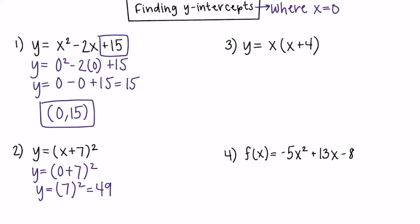Again, to be a y-intercept, our x would have to be 0. And when we plugged in 0 for x, we got 49 as our y. So we get the ordered pair (0, 49).